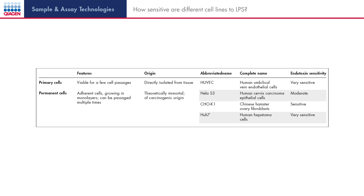In relation to transfection, how sensitive are different cell lines and how do they react to endotoxin exposure? The first rule of thumb is that permanent cell lines derived from carcinogenic sources are less sensitive than primary cells or cells in suspension. Permanent cells have undergone a high number of passages and are theoretically immortal. Primary cells are derived from fresh tissue and have gone through only a few passages. They are more differentiated than permanent cell lines and not as well characterized.